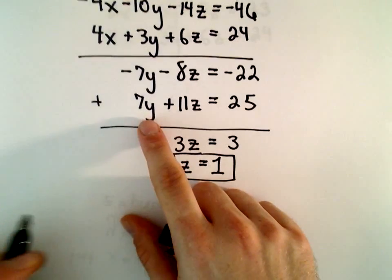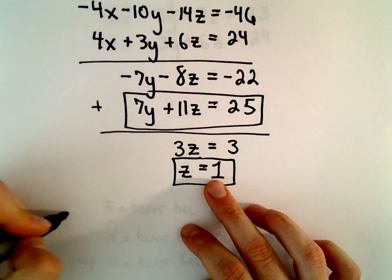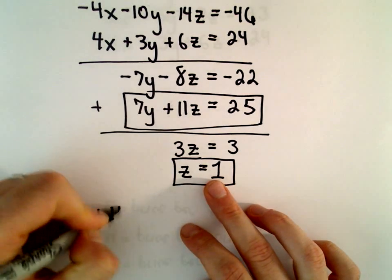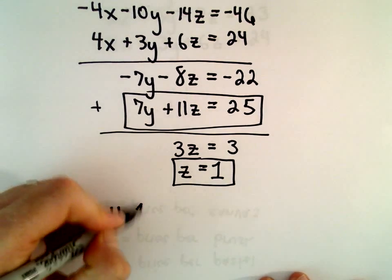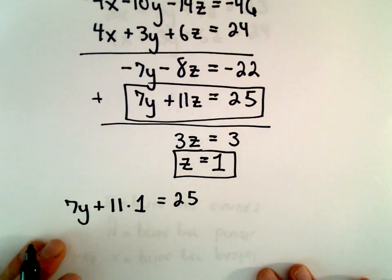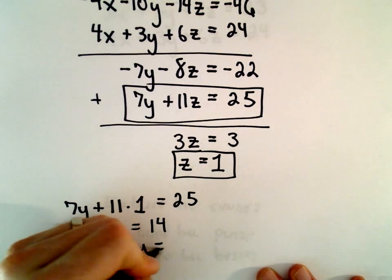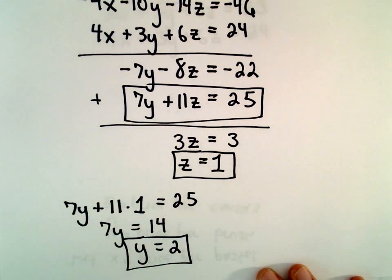So now I'm going to take our equation 7Y plus 11Z equals 25 and solve for Y. So we'll multiply 11 times 1. If we subtract 11 from both sides, we'll get 7Y equals 14, or Y equals positive 2.